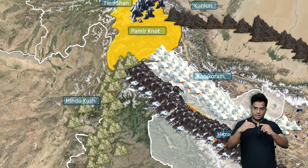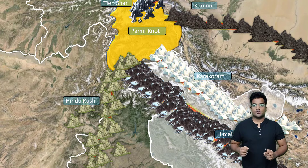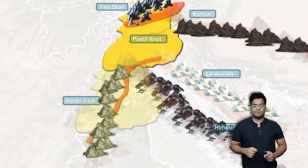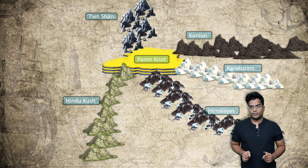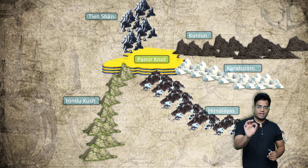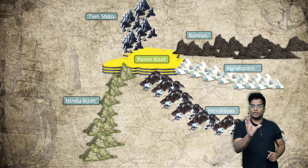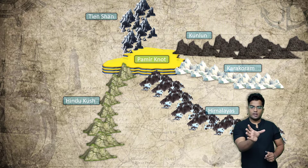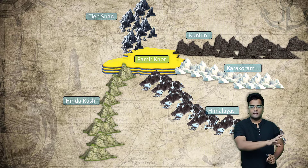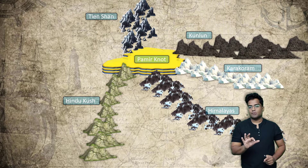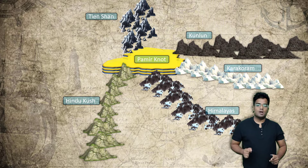Let's see a 3D diagram of how Pamirnaut actually looks. Essentially, as you can see, Pamirnaut is actually a plateau — table-like. This gives you a definite idea of how the area looks. Once again, you have the mountains: Tianshan, Kunlun, Karakoram, Himalayas, and Hindu Kush. And in between, you have the plateau — Pamirnaut.